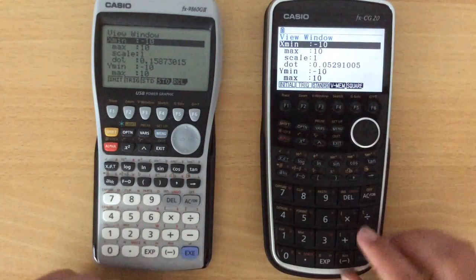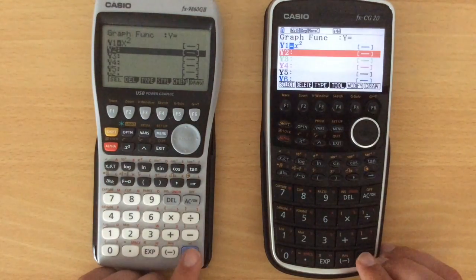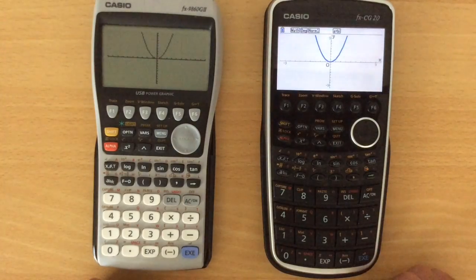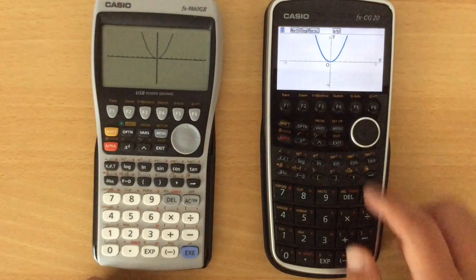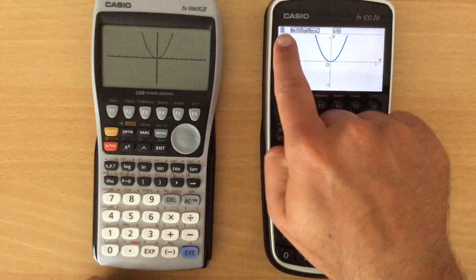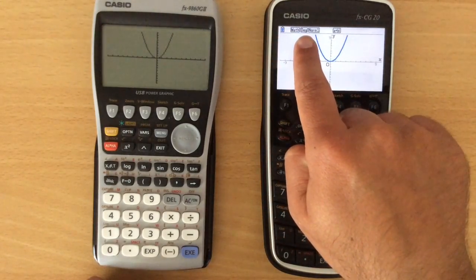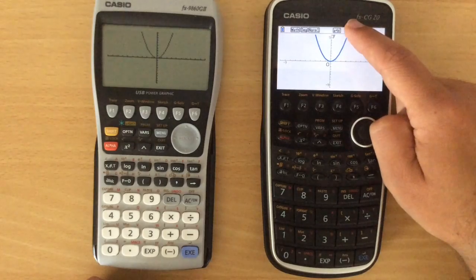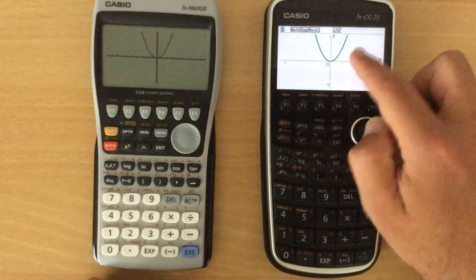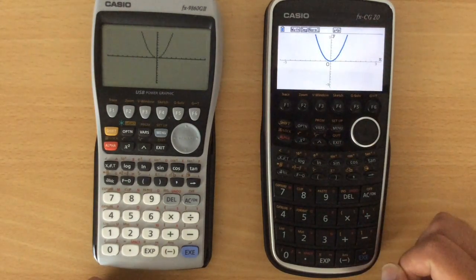Let's just make sure that we're set up the same. So let's go for just a standard minus 10 to 10 graph, and we can see slightly different displays. We've got indicators up here as well, which is quite nice, showing you how much battery is left, that you're in degrees mode. Always very useful to know which mode you're in. That I'm currently in a complex mode, that's fine, and we can see that better resolution to the display.